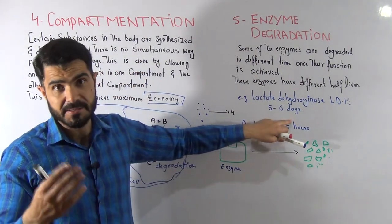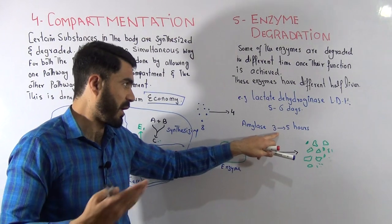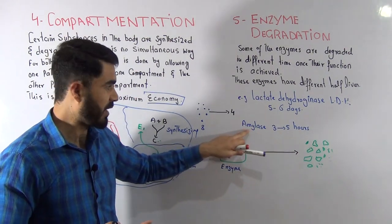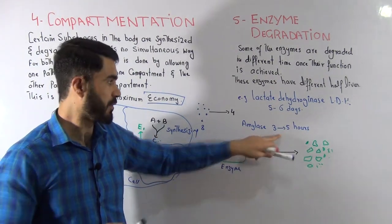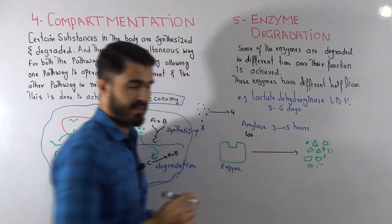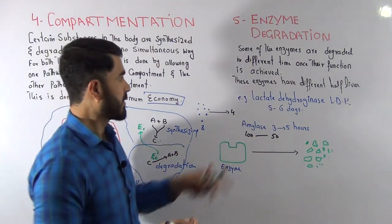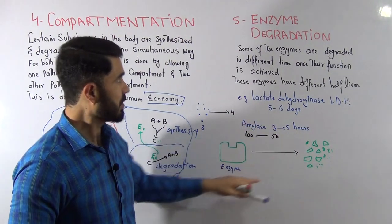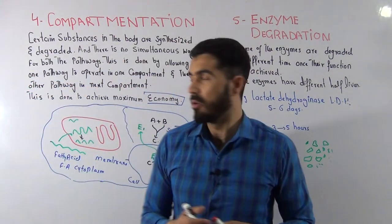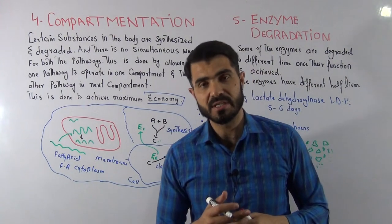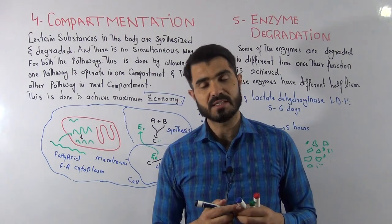Some enzymes take five to six days to reach half concentration, while others require only three to five hours. For example, the amylase enzyme has a very short half-life of three to five hours — if you have 100 amylase enzymes, after three to five hours the concentration will reduce to 50. This is another way of enzyme regulation. We have now discussed five different styles of enzyme regulation, and in the next part we will discuss the last style.